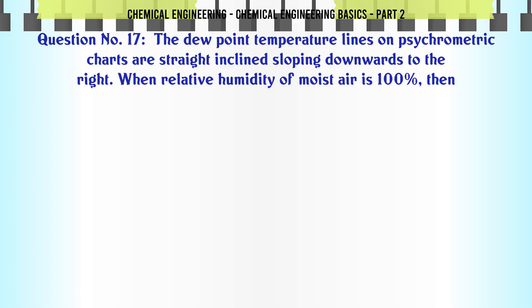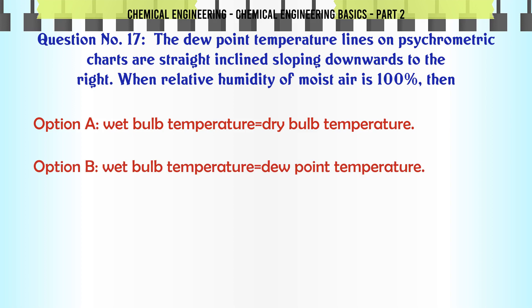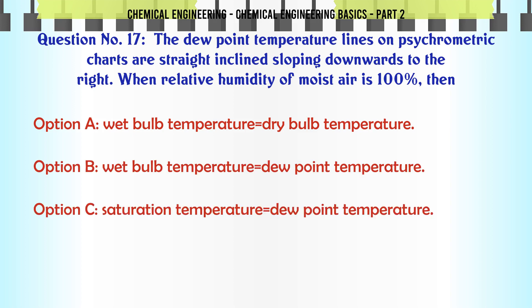The dew point temperature lines on psychrometric charts are straight, inclined, sloping downwards to the right.